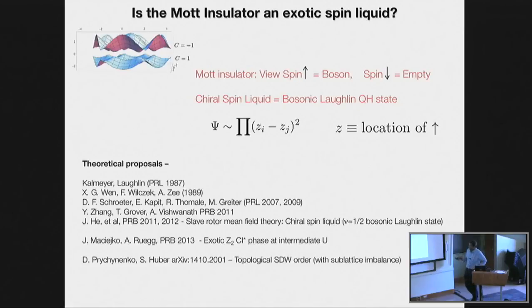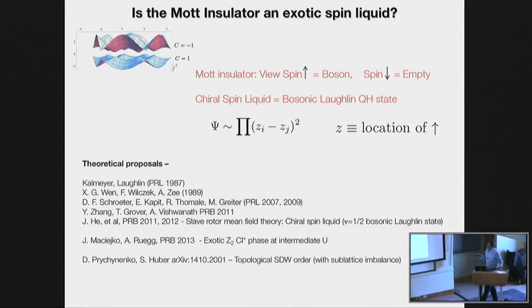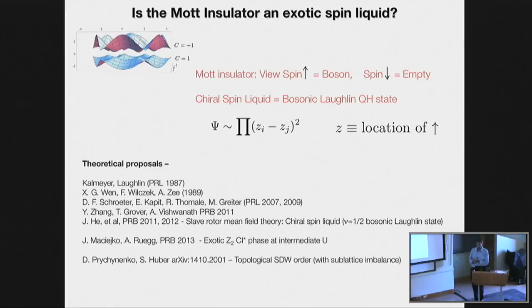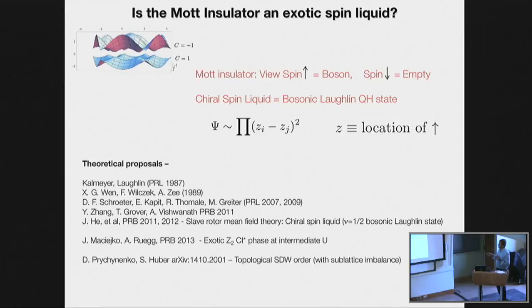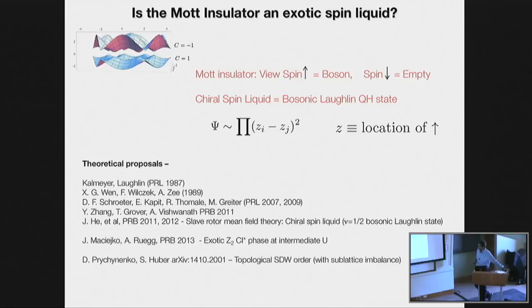There is a very nice proposal going back to Kalmeyer, Laughlin, and others including Wen and Wilczek, who were thinking about spin liquid physics. One can map, as Jason was mentioning yesterday, this idea that you can take two integer quantum Hall systems and fuse them together to form the bosonic Laughlin liquid. Here one can think about taking two integer quantum Hall systems — spin up and spin down — and performing a Gutzwiller projection that completely projects out double occupancies. That gives rise to a bosonic Laughlin state where the z's label the location of the up-spins; the up-spins occupy half the lattice and the down-spins occupy half. If you think of spin up as hardcore bosons, one can map it to a wave function very similar to what Jason was explaining yesterday.